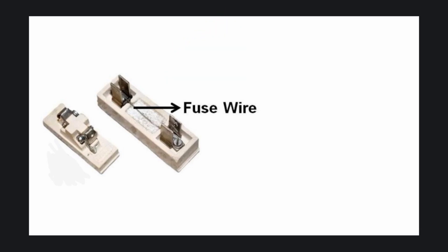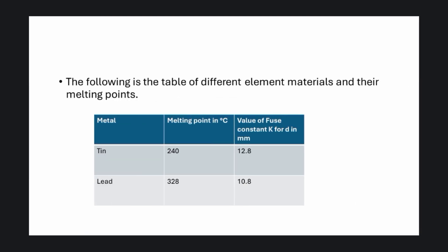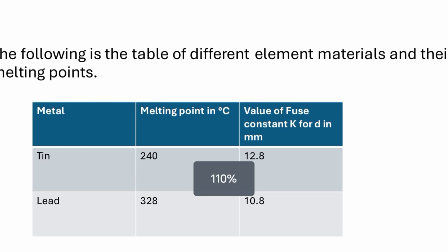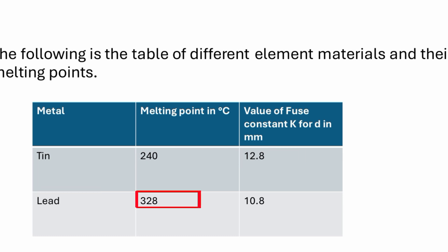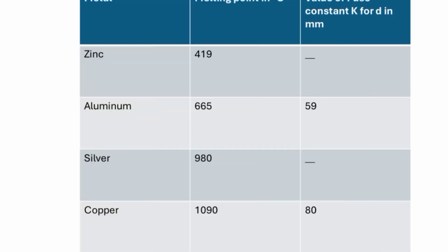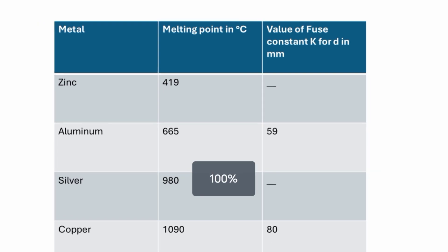The following is the table of different fuse element materials and their melting points. Tin: melting point 240°C, fuse constant 12.8. Lead: melting point 328°C, fuse constant 10.8. The melting point and value of fuse constant table is very important.